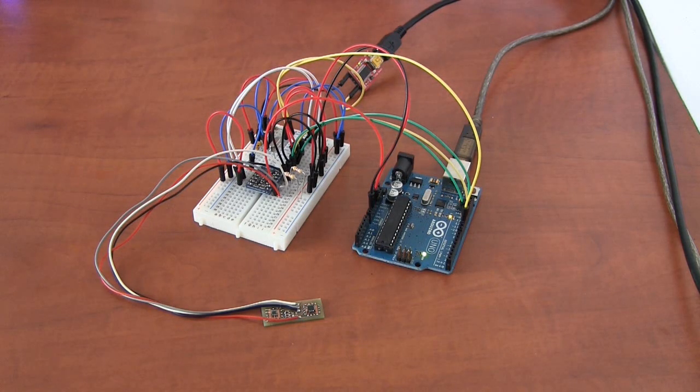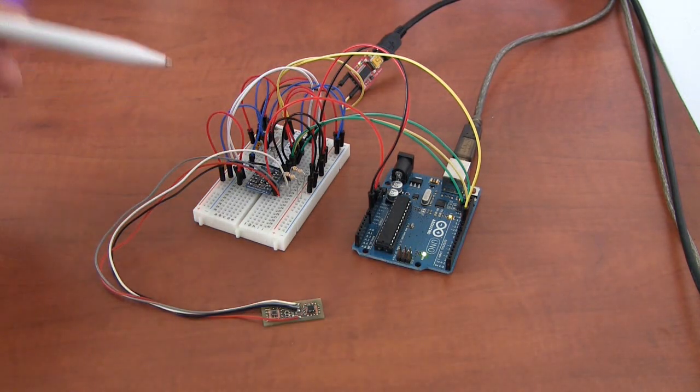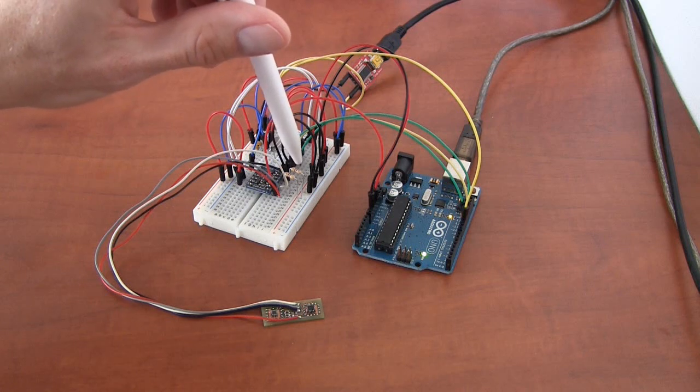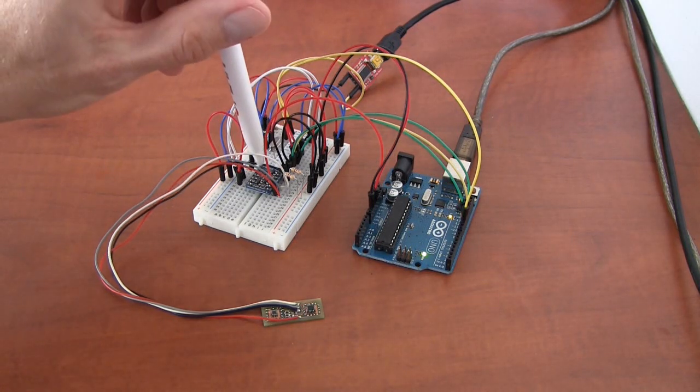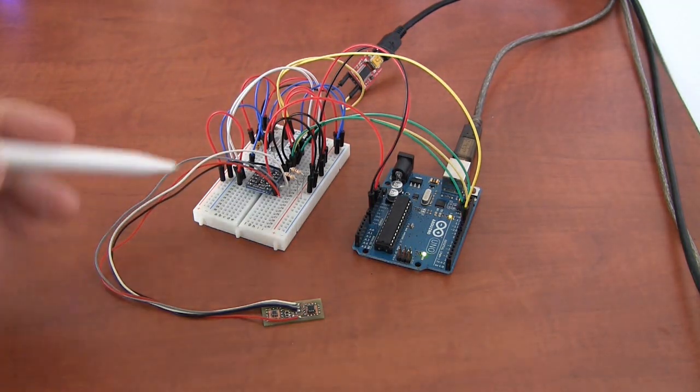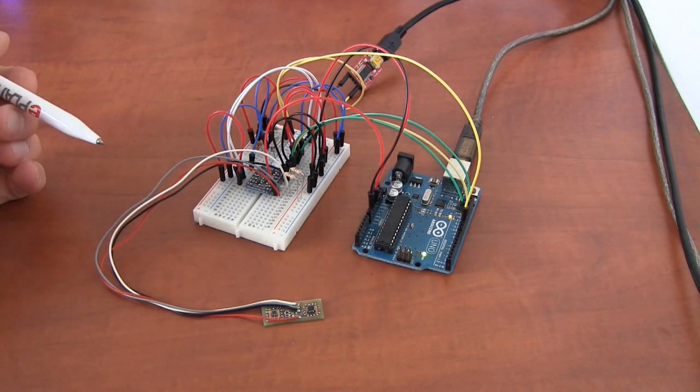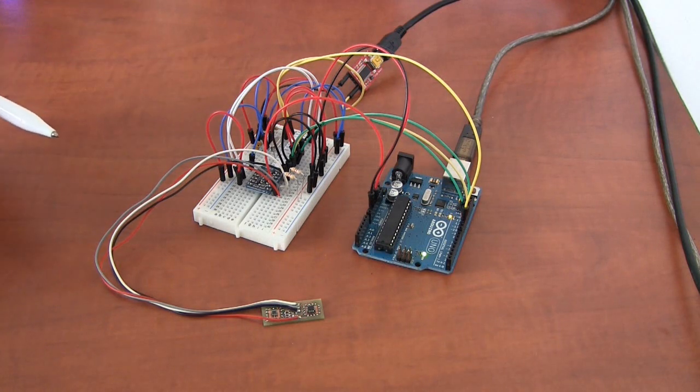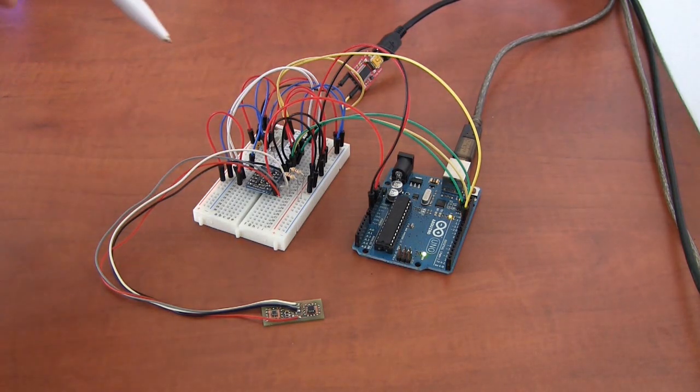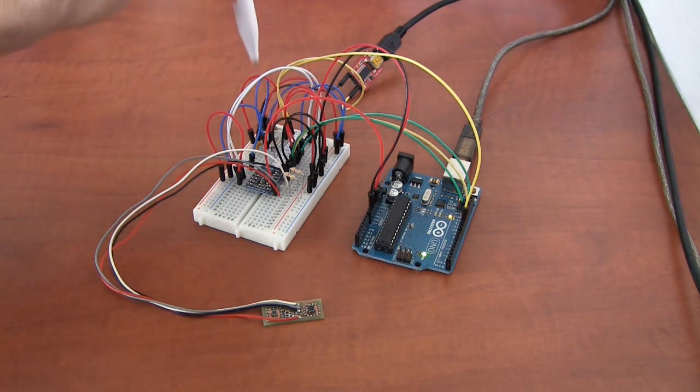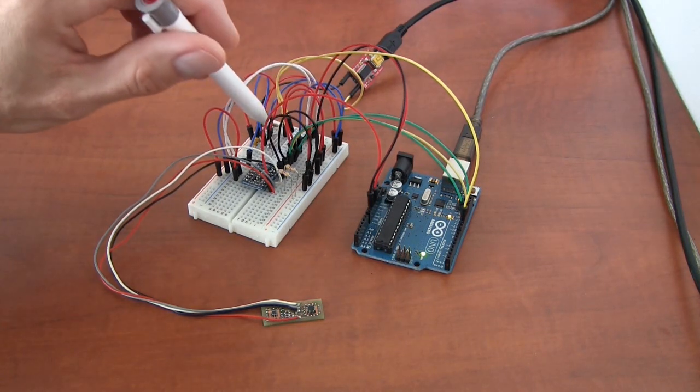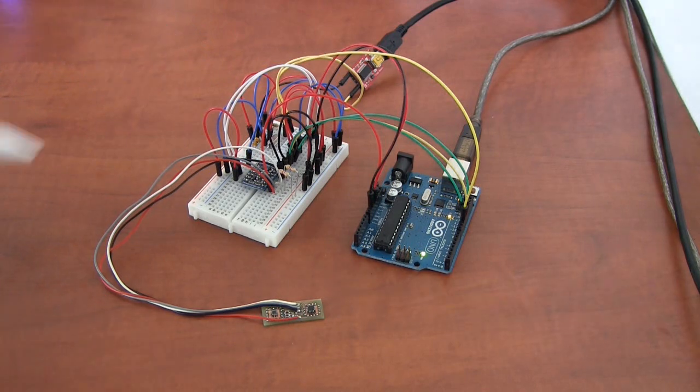These sensors are running at 3.3 volts and it is necessary to have a level converter. Although there are 10k pull-up resistors on the level converter, I use two additional resistors. The 3.3 volt is supplied by the Arduino Uno. On the breadboard is an ATmega328 and a 16 megahertz crystal - this processor will run the test program. This is the same processor as on the Arduino Uno.